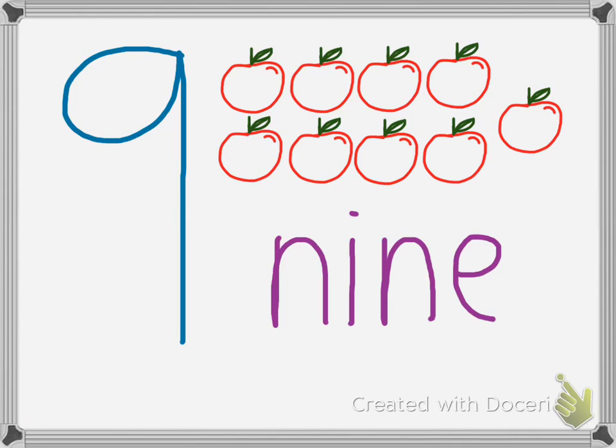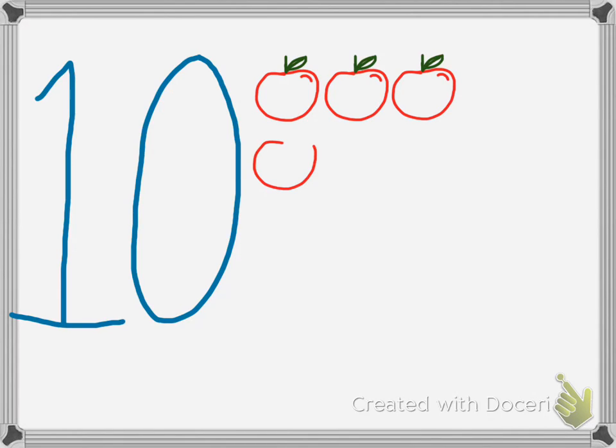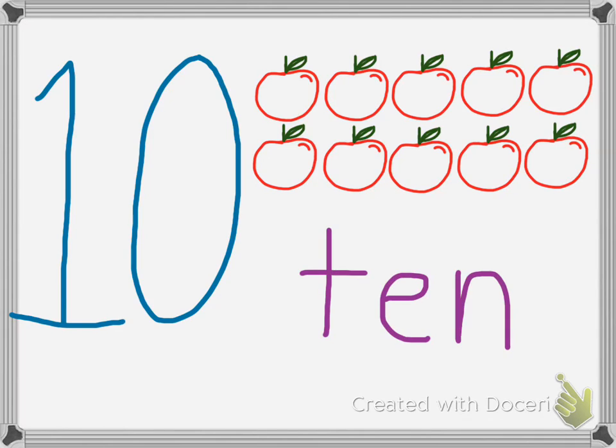And of course, 1 more than 9 is 10. Woo-hoo! 10. And now we have 1, 2, 3, 4, 5, 6, 7, 8, 9, 10. 10 delicious crunchy apples. Two groups of 5. And we see the word 10. Everybody say 10. Hi, 10.